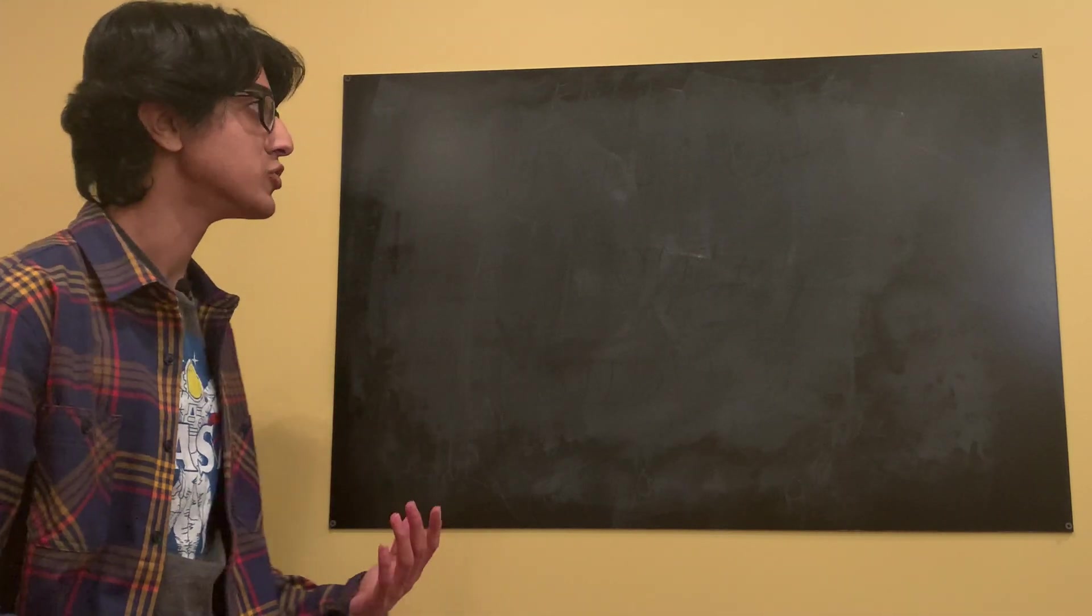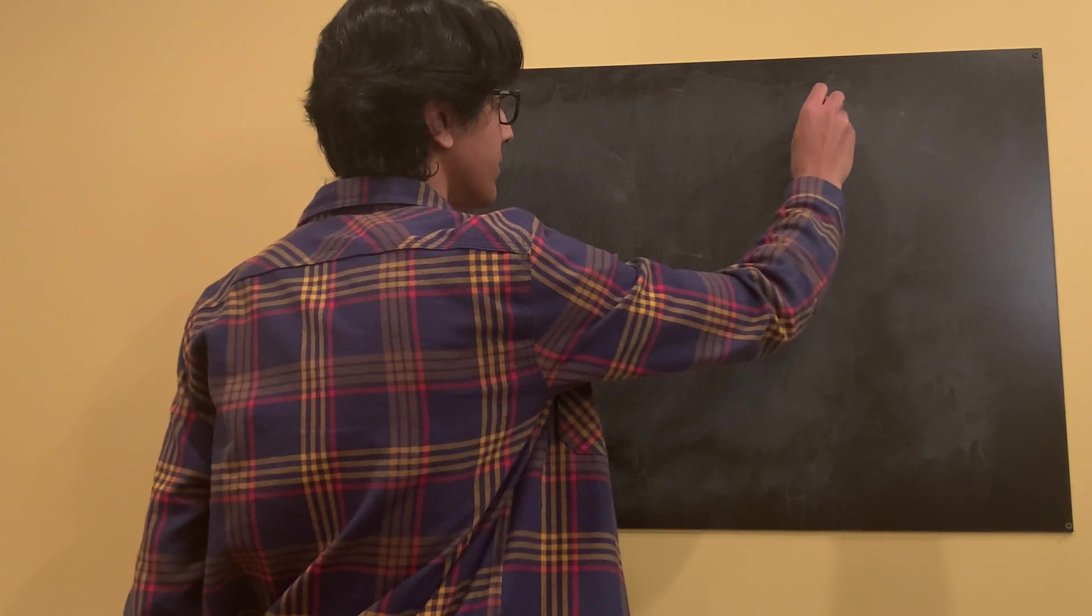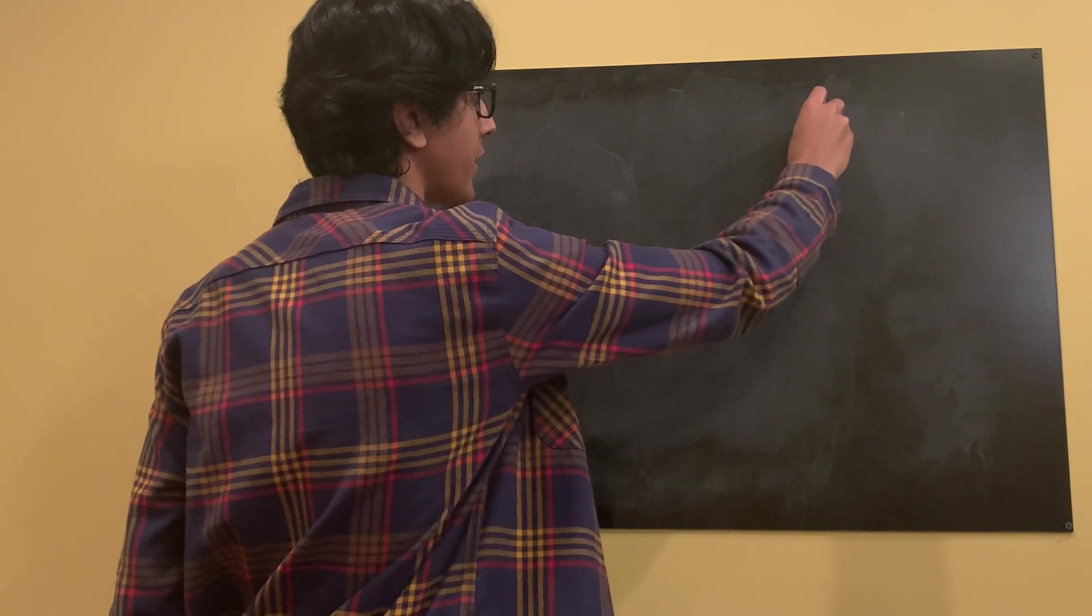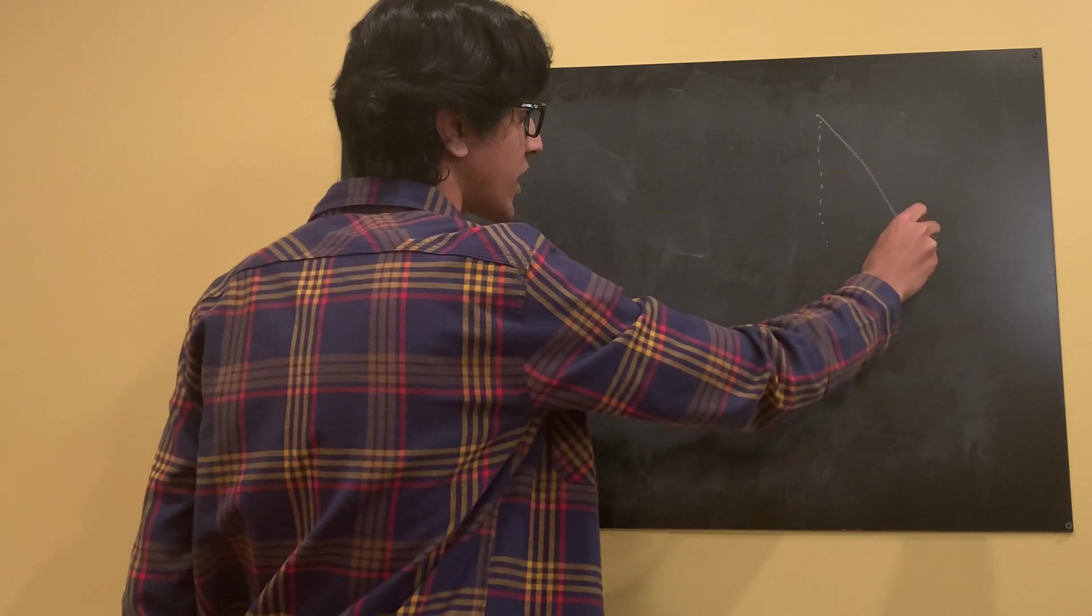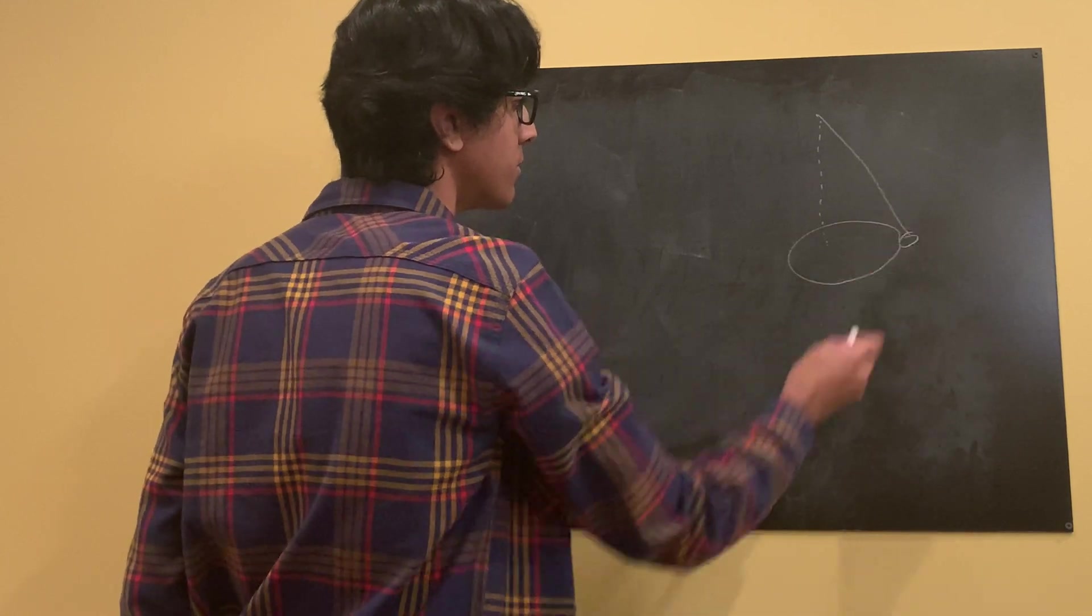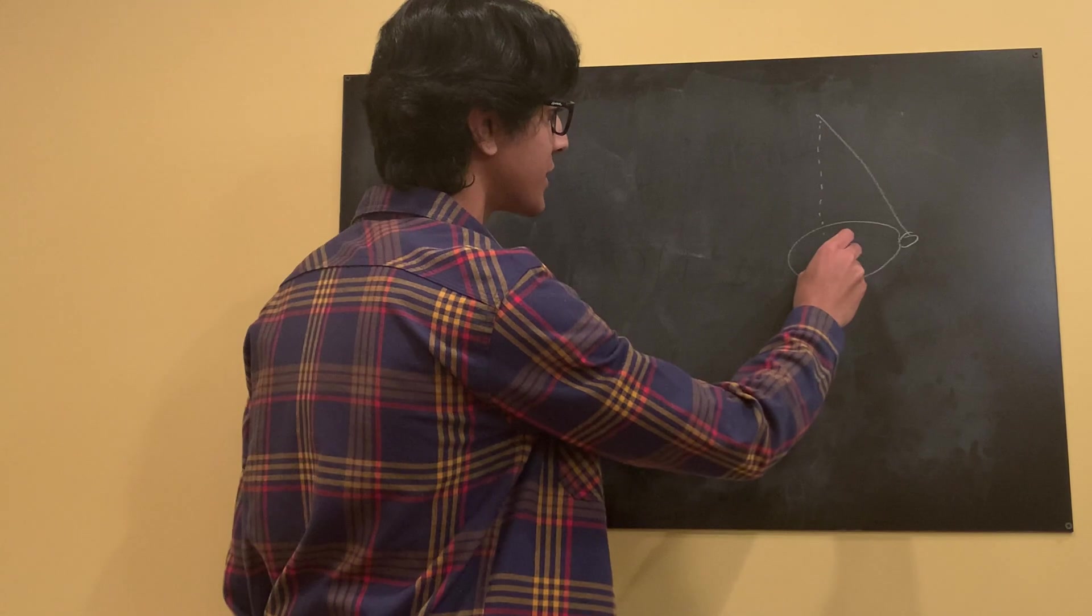Let's start off by drawing our diagram for this problem. So we'll draw our conical pendulum. This is like a rod holding it up. Here's a string with our object swinging around in circular motion. That's not a very good circle. And then over here,